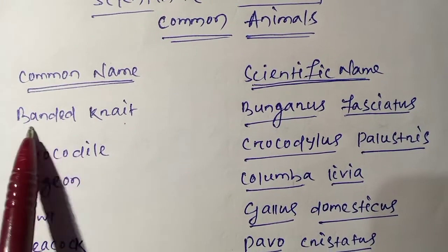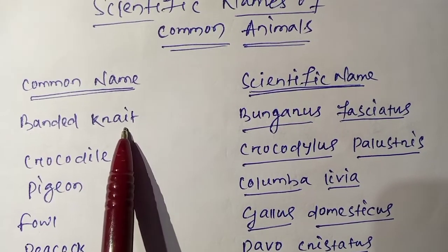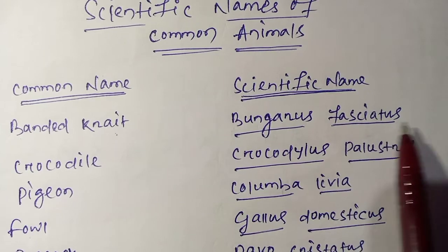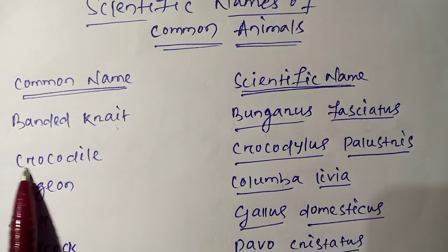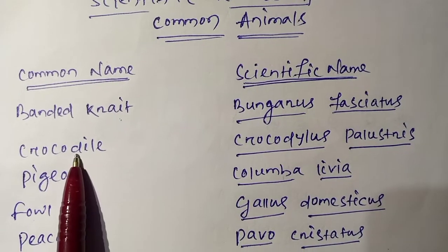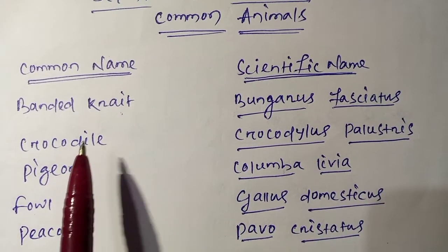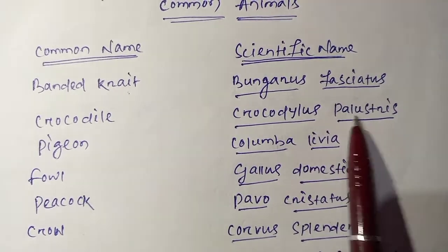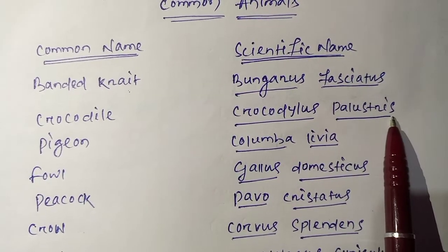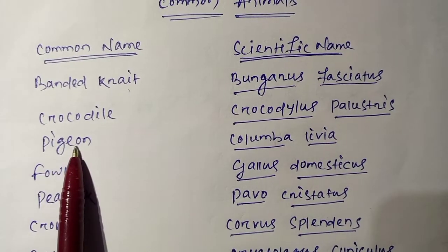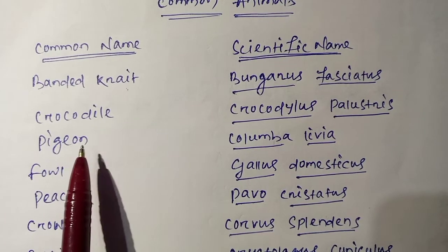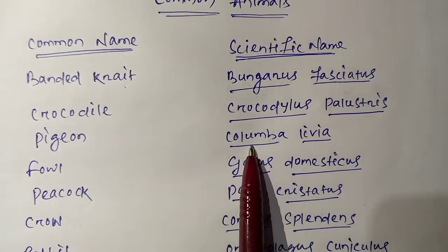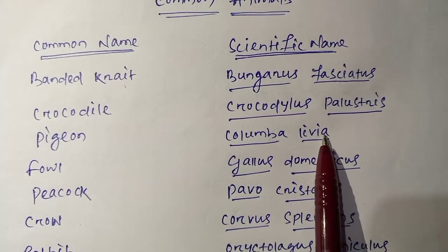The zoological name of Banded Krait is Bungarus fasciatus. Next is Crocodile. The scientific name is Crocodylus palustris. Next is Pigeon. The zoological name of Pigeon is Columba livia.